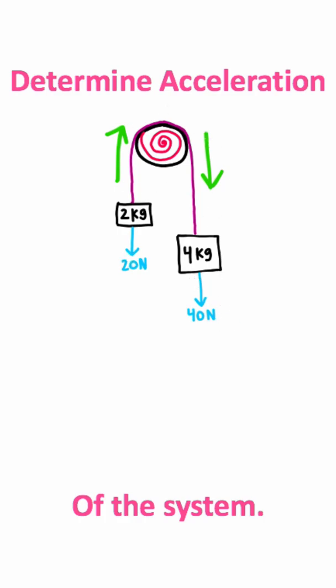The way you can calculate acceleration is by taking your net force divided by your total mass. Now, the net force is going to be your driving force minus the weaker forces in the system. So, our driving force is clearly going to be this 40 Newtons here, since that's causing the system to pull in this direction.